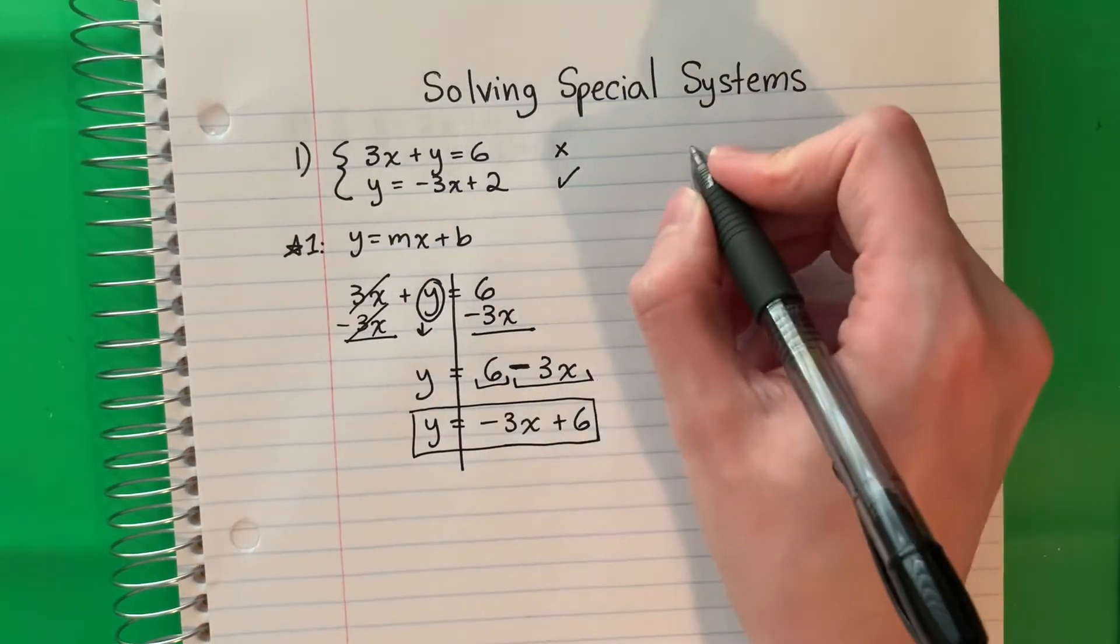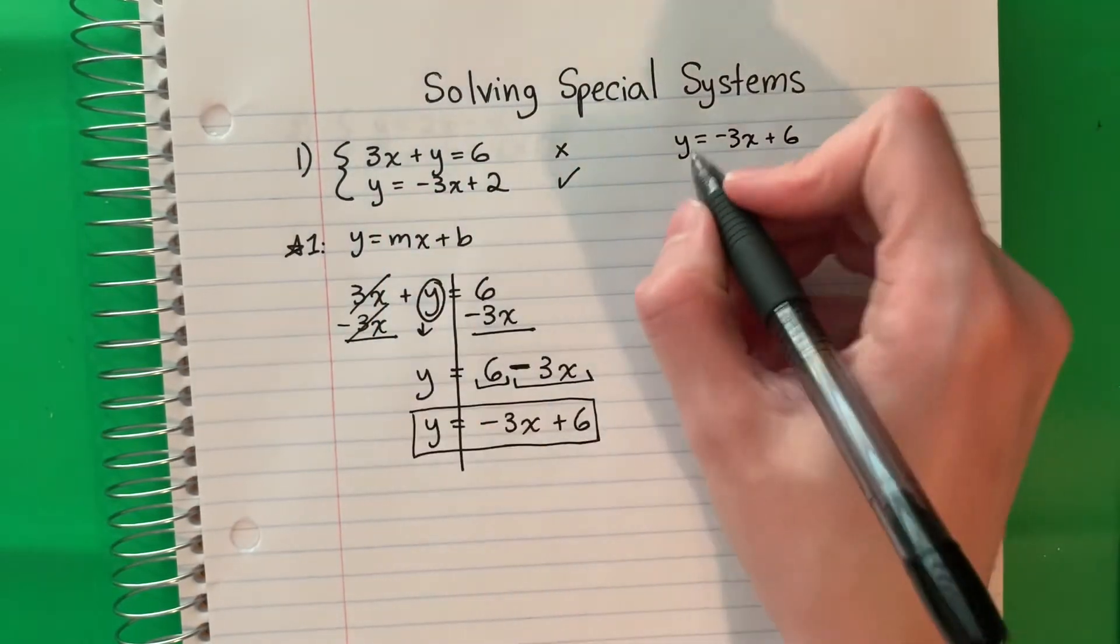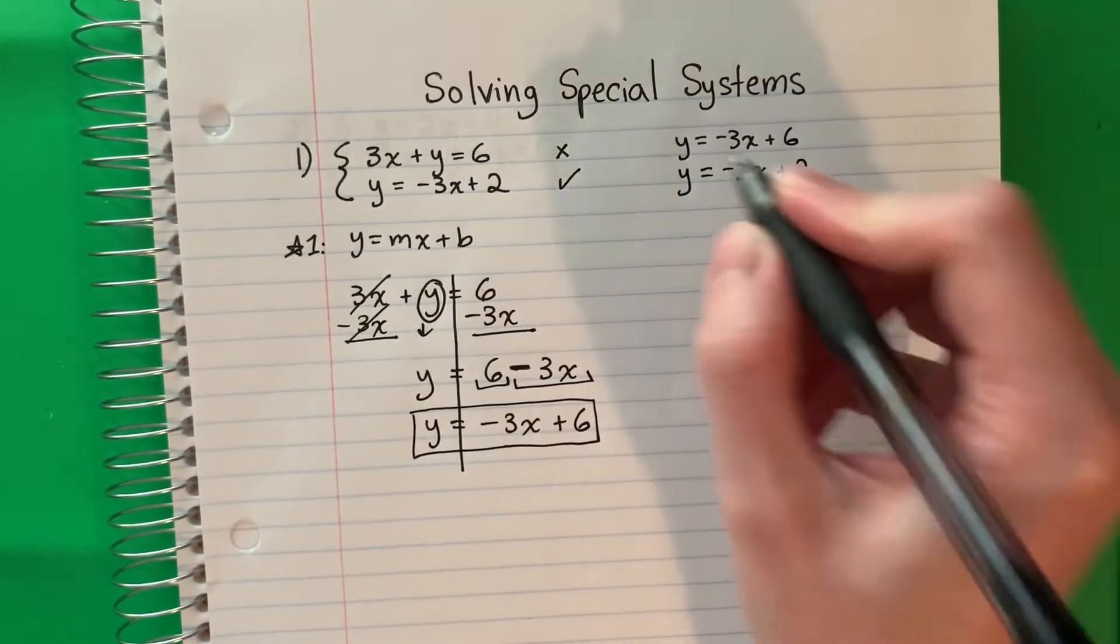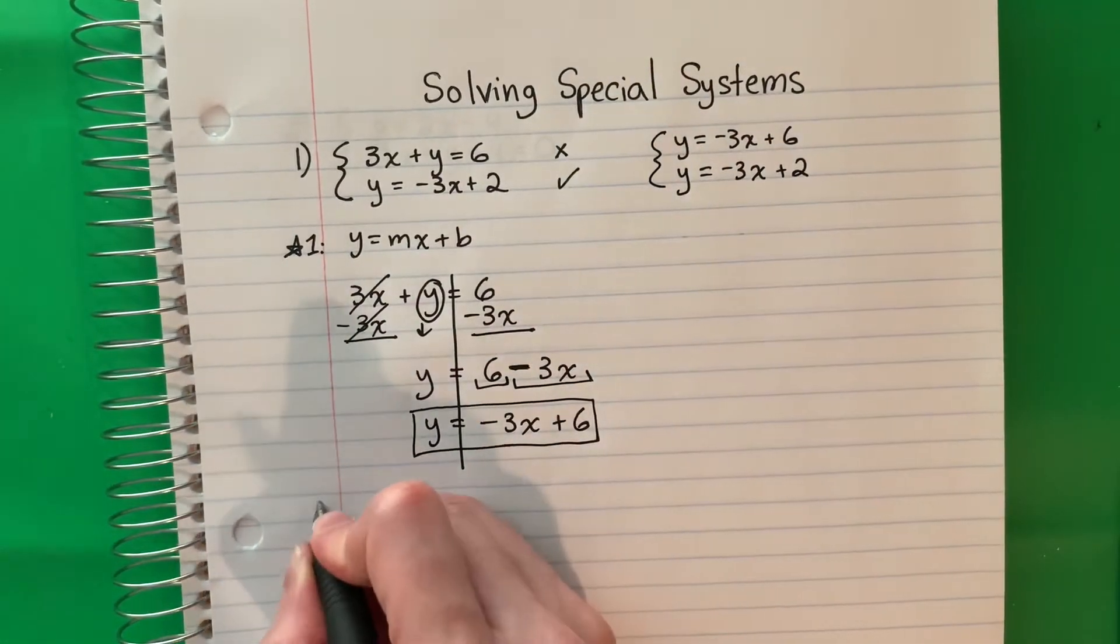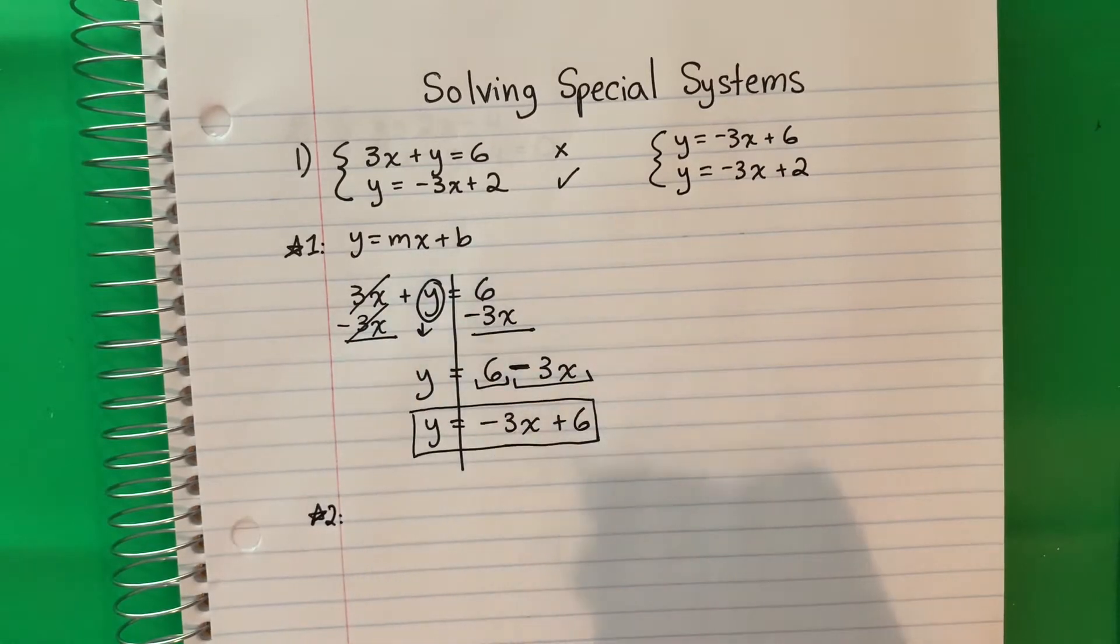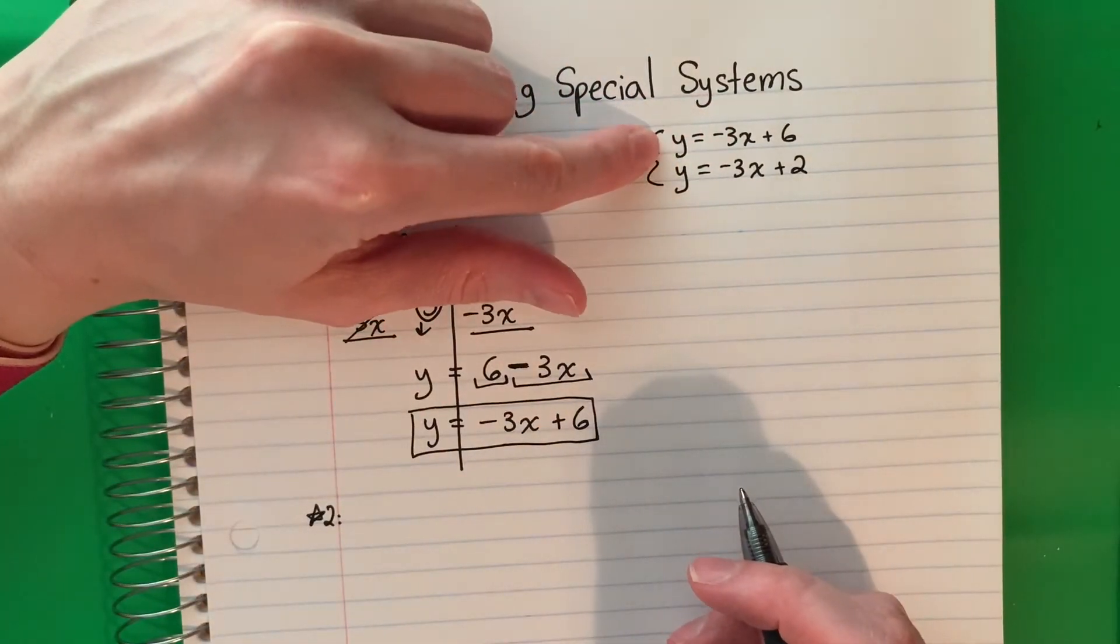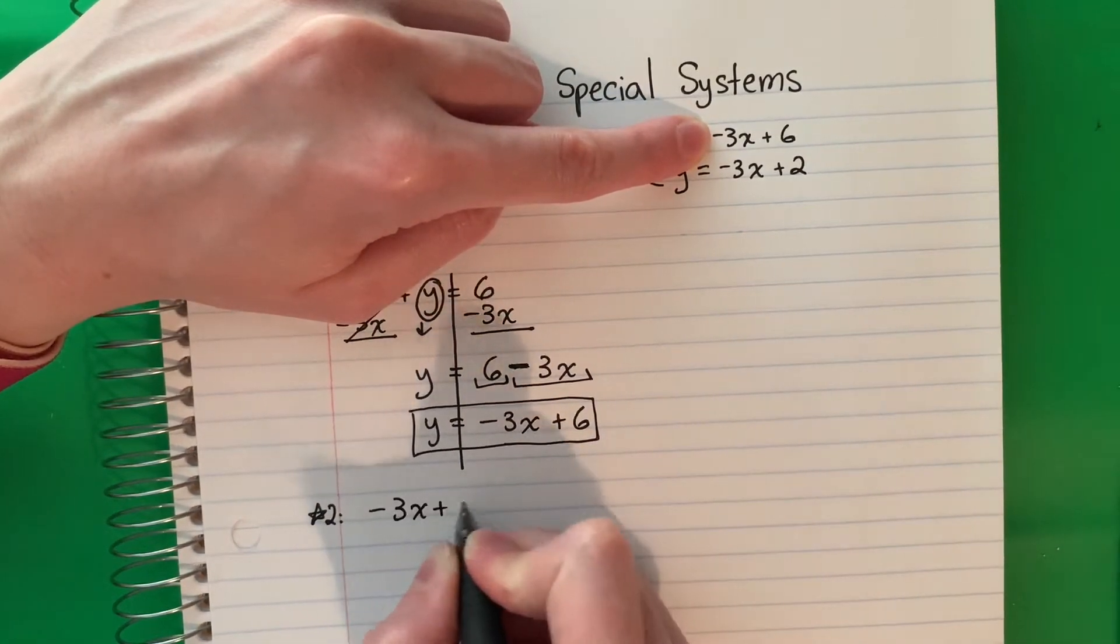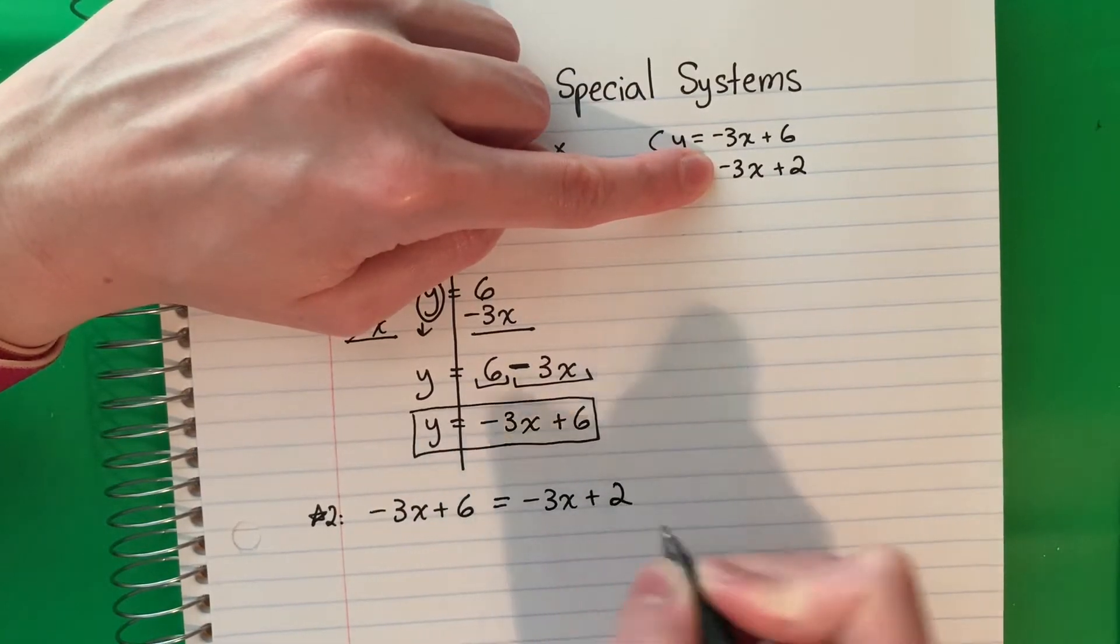I'm going to put the new one here. And this one is good the way it is. So this is what I'm going to use. Number 2, I'm going to put them equal to each other. So negative 3x plus 6 equals negative 3x plus 2.